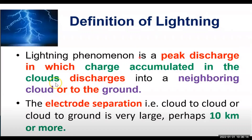Even though the distance between the two clouds is 10 kilometers, lightning phenomena takes place between cloud to ground and cloud to cloud. Very high voltage develops in the cloud because of a very high potential difference between the two clouds, and then lightning phenomena takes place. Because of this high potential difference, the air will become ionized and a spark takes place - that spark is nothing but light.